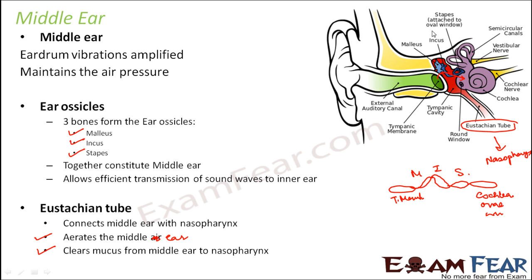So the middle ear, with its three tiny ossicles and the eustachian tube, provides a pathway for the effective transmission and amplification of vibrations and sound waves into the inner ear.